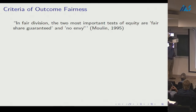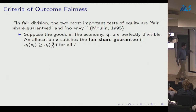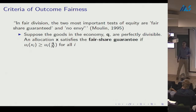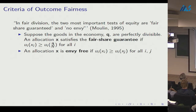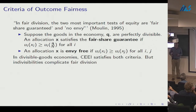Now let me turn to outcome fairness criteria. In fair division, the two most important notions of ex post fairness are the fair share guarantee and no-envy. An allocation satisfies the fair share guarantee if each agent gets a bundle they like better than their 1/n share of the endowment. An allocation is envy-free if each agent likes their bundle at least as well as any other agent's bundle. With divisible goods, competitive equilibrium from equal incomes satisfies both criteria and is Pareto efficient by the first welfare theorem.